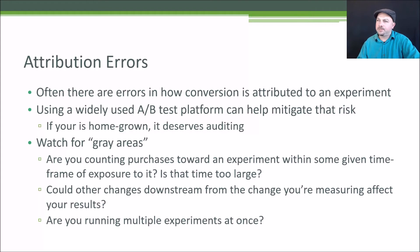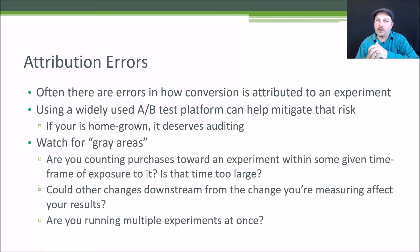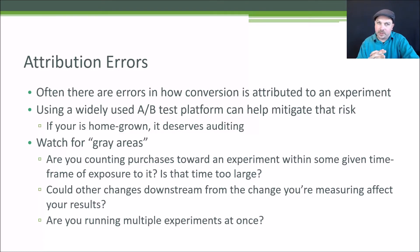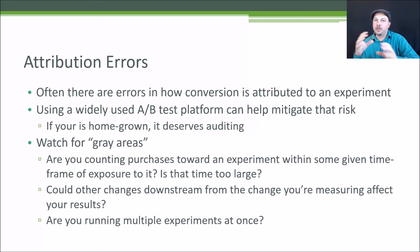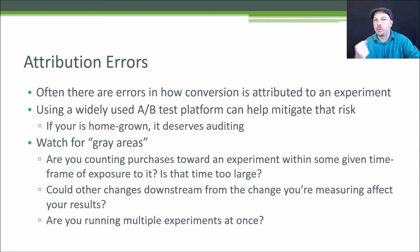We also talked briefly about attribution errors. If you are using downstream behavior from a change, that gets into a gray area. You need to understand how you're actually counting those conversions as a function of distance from the thing that you changed, and agree with your business stakeholders up front as to how you're going to measure those effects. You also need to be aware that if you're running multiple experiments at once, will they conflict with one another? Is there a page flow where someone might encounter two different experiments within the same session? If so, that's going to be a problem, and you have to apply your judgment as to whether these changes could meaningfully interfere with each other and affect the customer's behavior.